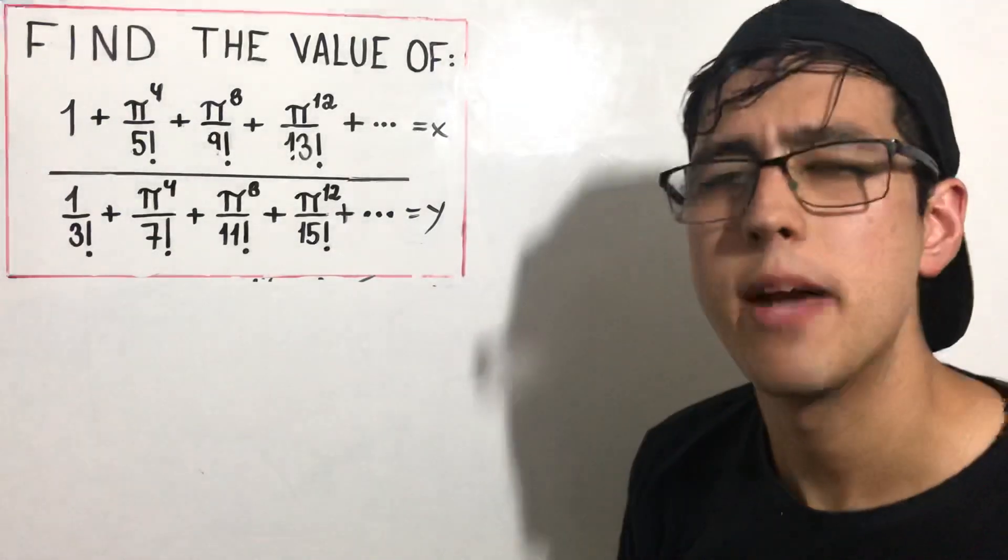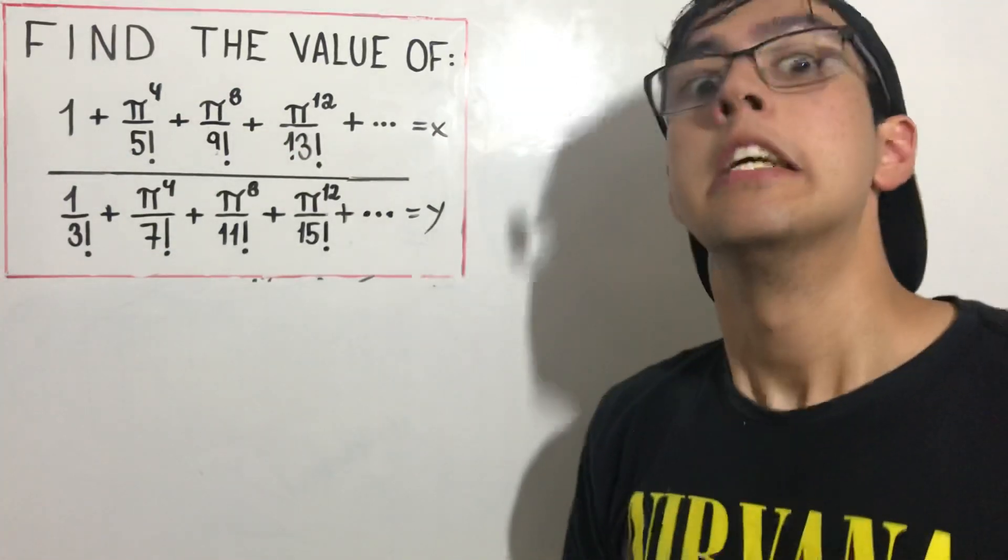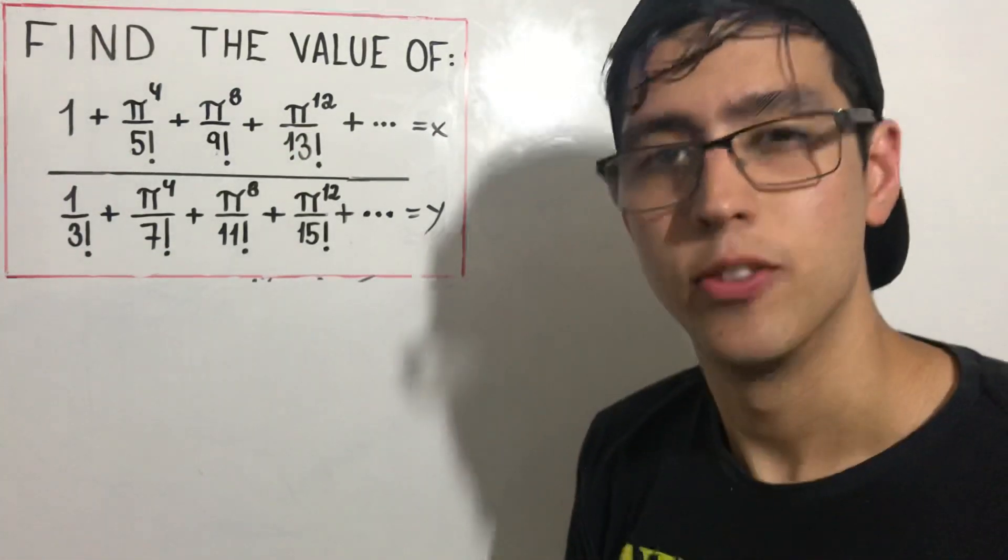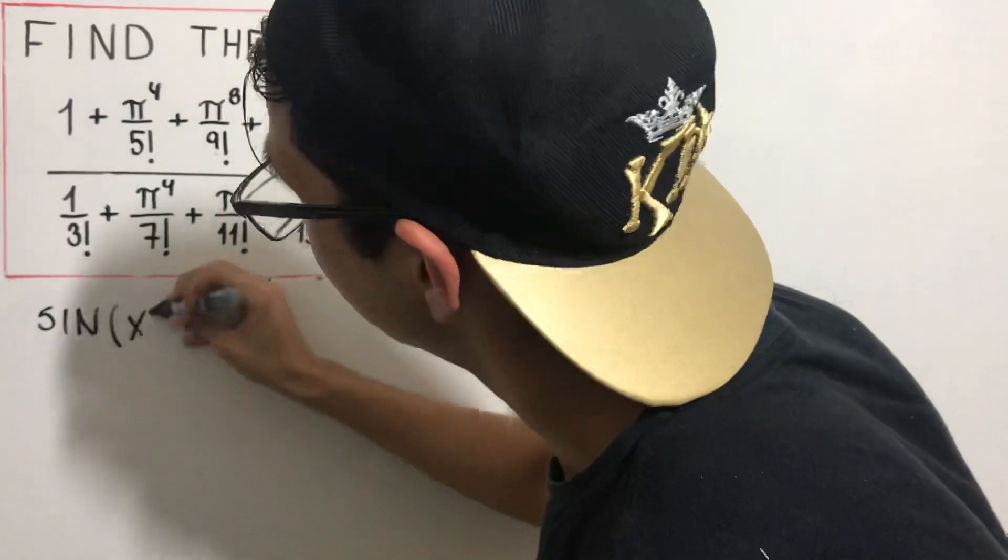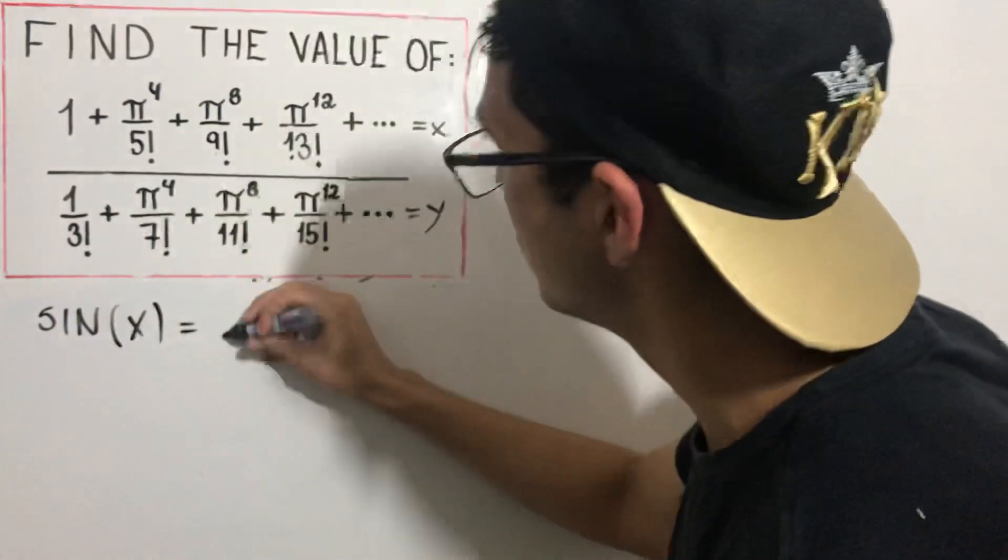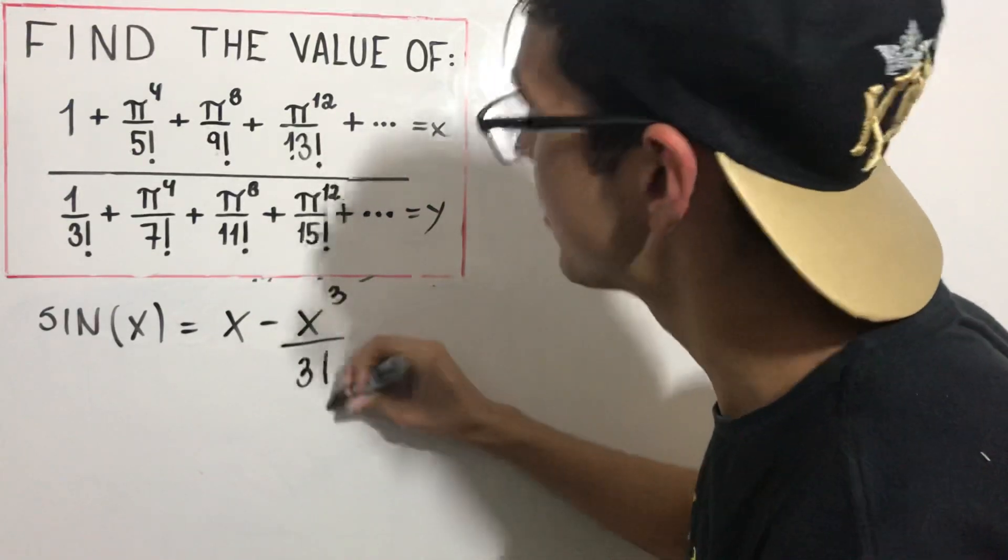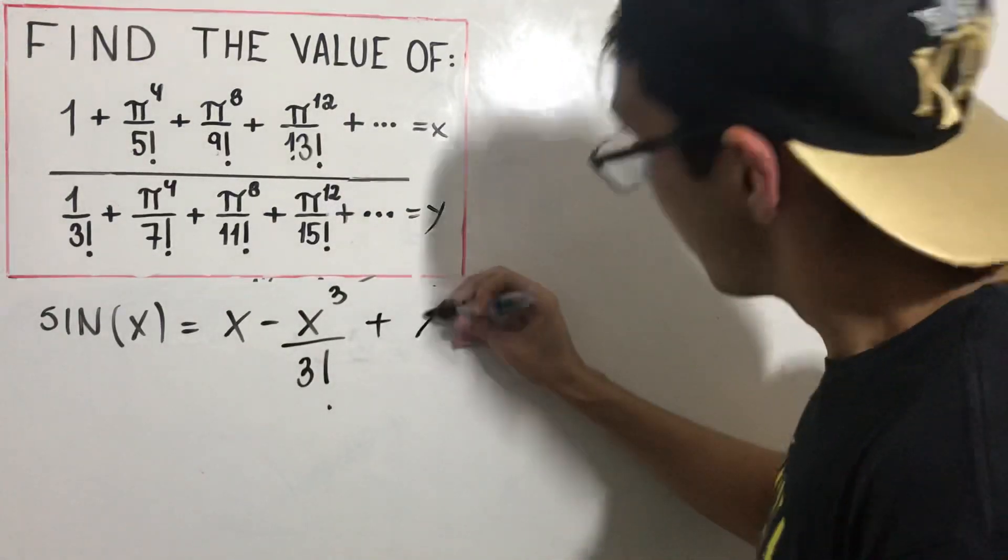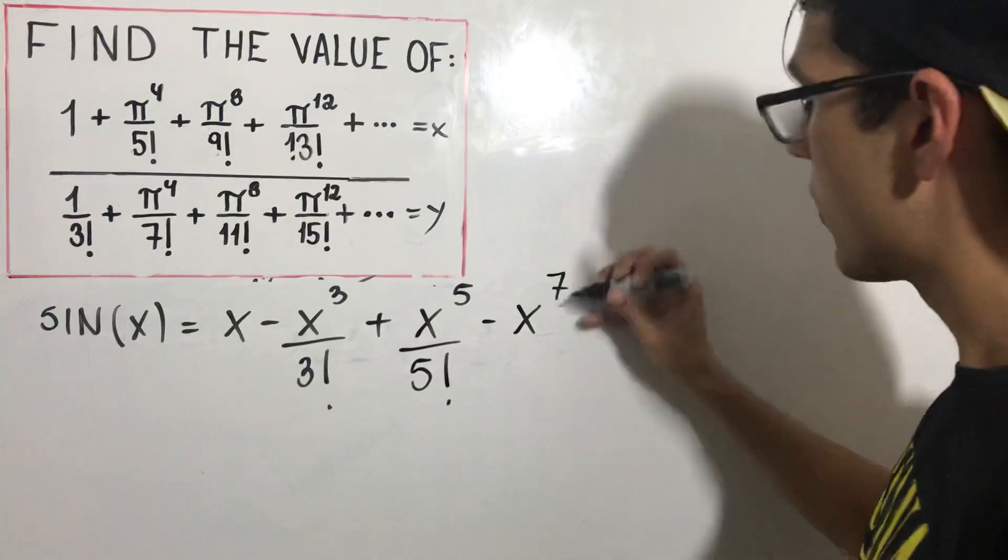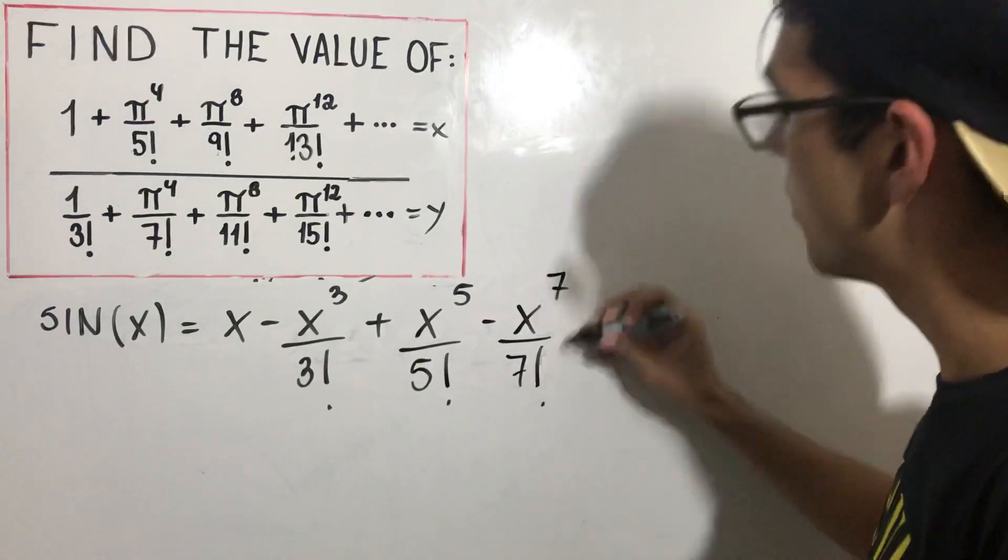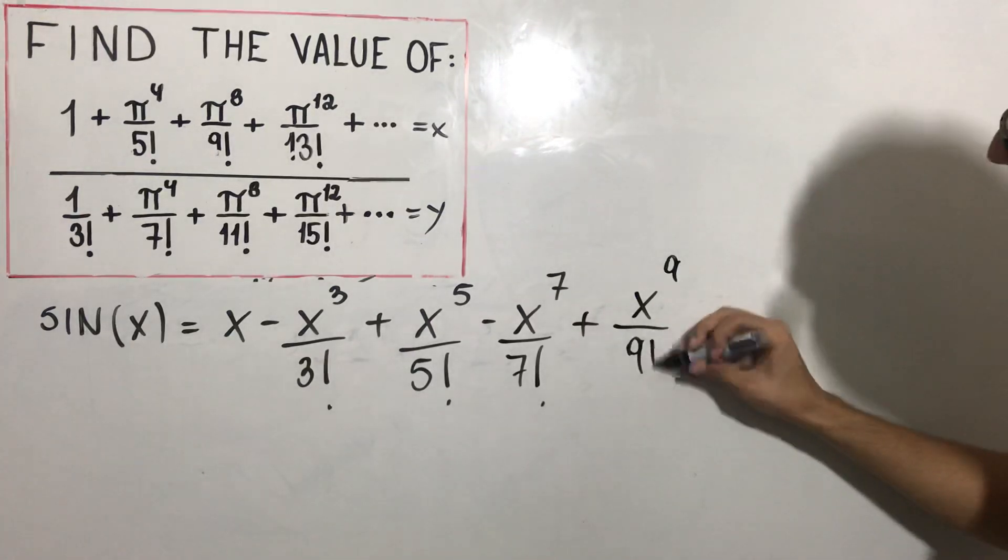Do you remember the Taylor and Maclaurin series? Specifically the sine one, the sine expansion. Do you remember it? The sine of x is equal to x minus x³ divided by 3! plus x^5 divided by 5! minus x^7 divided by 7! plus, oh my gosh, x^9 divided by 9! and so on.